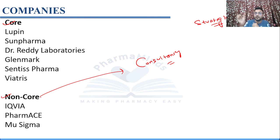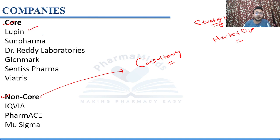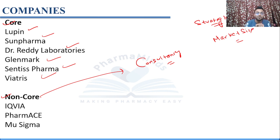Consultancy companies provide data for a core company that wants to launch a particular drug — for example, the market size, meaning how many people in India need that drug. So consultancy is all about strategy making. Core company examples include Lupin, Sun Pharma, Dr. Reddy's Laboratories, Glenmark, Centaur Pharma, and Viatris. Non-core companies include IQVIA, Pharmanews, and Sigma, among others.